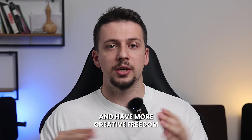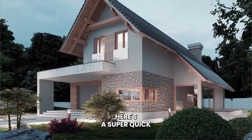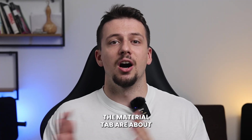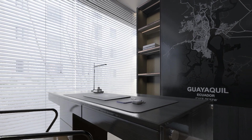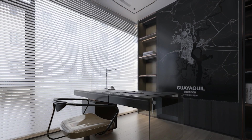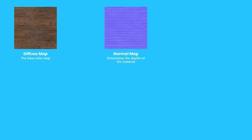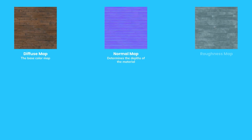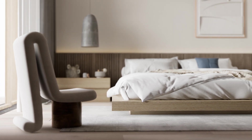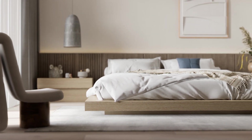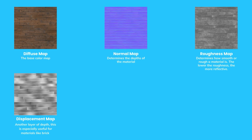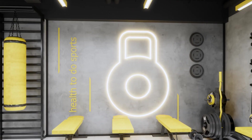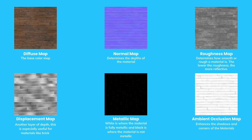In case you want to tweak these and have more creative freedom, here's a super quick non-nerdy guide on what each section under the Material tab does. The diffuse map is basically the base color, indicating what color the material has. The normal map determines where depth is needed in the material. The specular map controls the reflections of non-metallic materials. The roughness map shows how rough or smooth the material is — dark areas look smoother and more reflective, while lighter areas are rougher and less reflective. The metallic slider determines how metallic the material is — white is fully metallic, black is not metallic. Ambient occlusion enhances the shadows and corners of the materials.